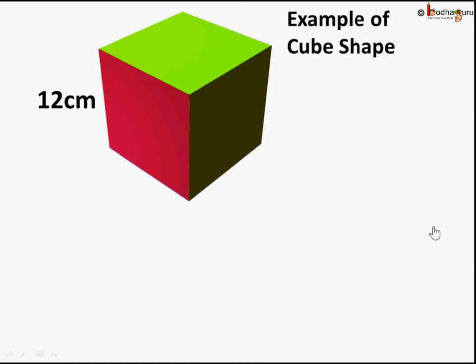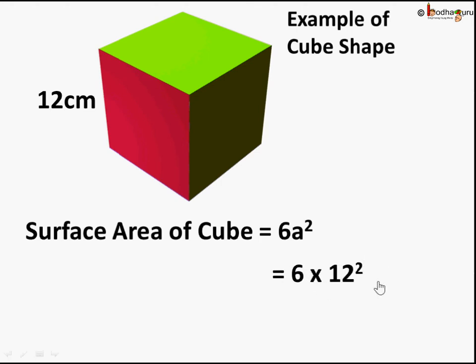Let's take an example. Here is a cube with 12 centimeter as the side, all sides are 12 centimeters long. So its surface area would be 6 a square, 6 into 12 square. 12 square means 12 into 12 which is 144. 6 into 144 is 864 square centimeter because this was in centimeter, area will be square centimeter, 864 square centimeter.